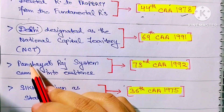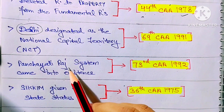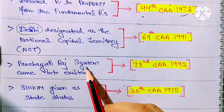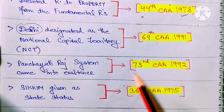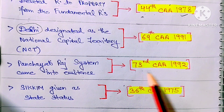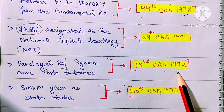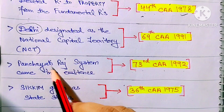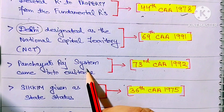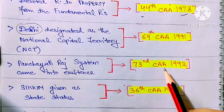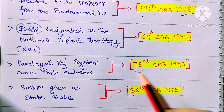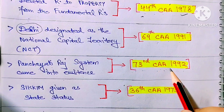Next: the Panchayati Raj system came into existence through the 73rd Amendment Act 1992. The Panchayati Raj system was brought into the Constitution through this amendment act.